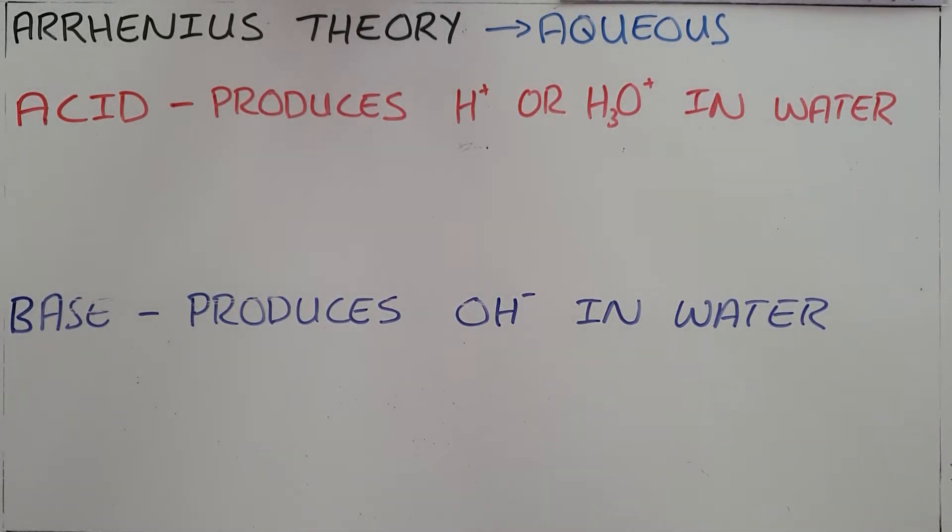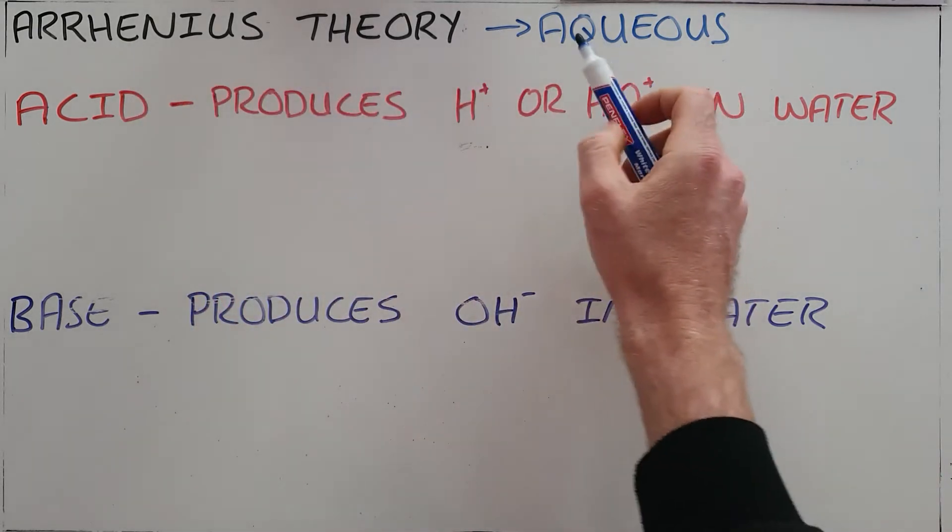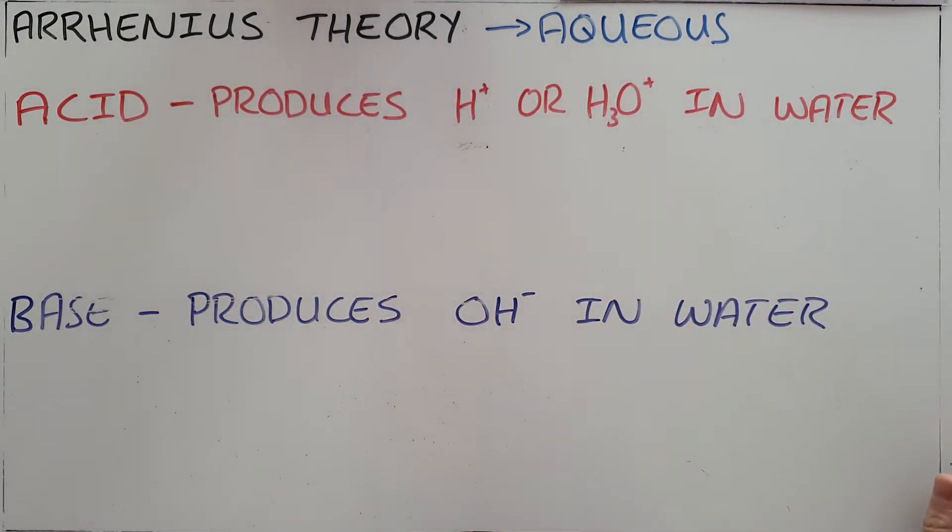There are largely two theories that we use to explain the behavior and properties of acids and bases. The first of these is the Arrhenius theory that is used specifically for acids and bases in aqueous solutions.